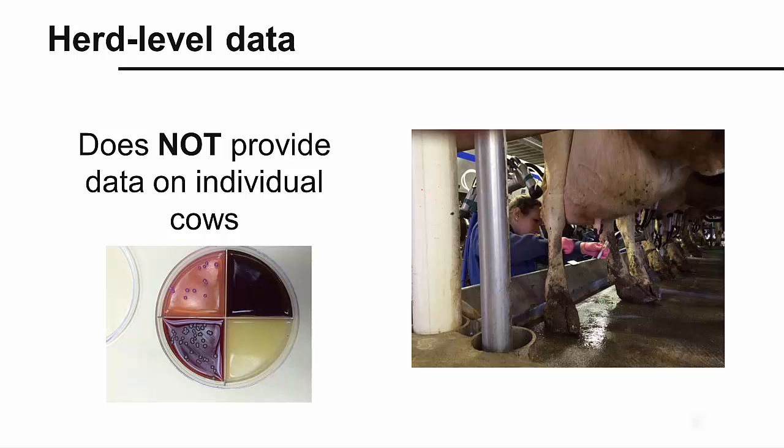In order to determine the cause of mastitis in an individual cow, a sample should be taken from that cow only. This sample can be from one quarter or from a combination of multiple quarters from that cow. The individual sample is then processed and cultured separately.